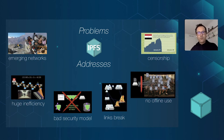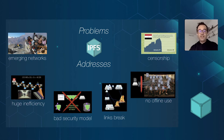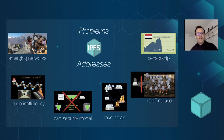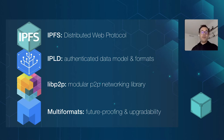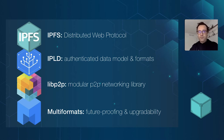Some of the problems IPFS aims to address are shortcomings of the web we know today — things like websites going down, DDoS attacks, censorship, things not working offline, a security and trust model not really in your control, as well as broken links and major network inefficiencies. We do this with IPFS on top of a stack that includes IPLD for linking data, LibP2P — a modular P2P networking library — and multi-format formats for future-proofing the web.